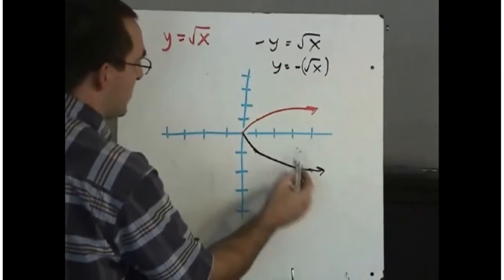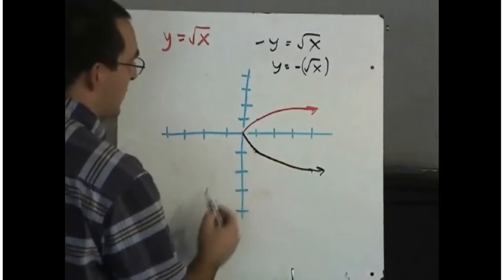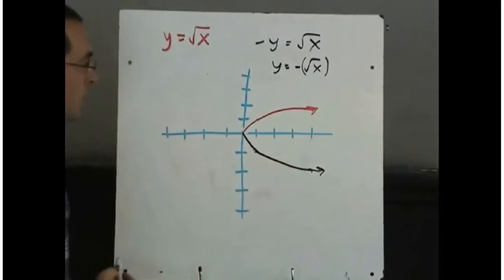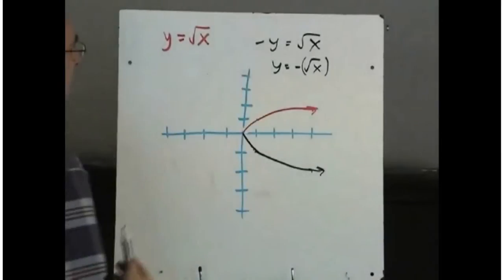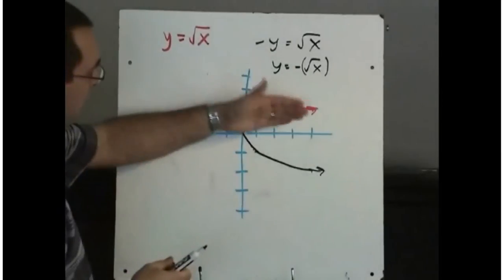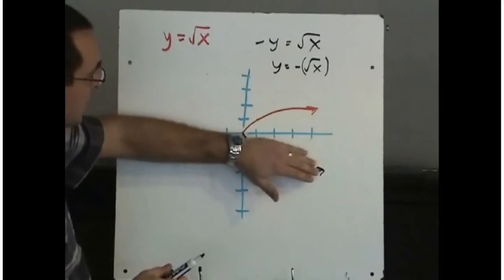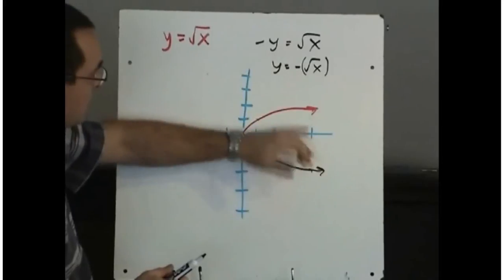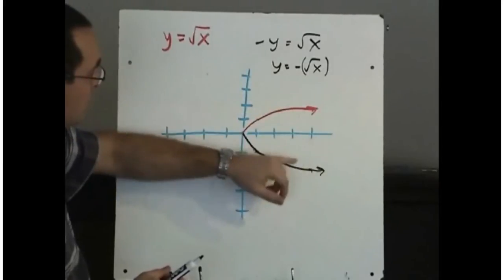So a positive 2 becomes a negative 2. Positive 1 becomes a negative 1. And obviously 0 remains the same. So when we replace y with minus y, we get the graph reflected about the x axis. When you reflect about the x axis, all of your y values have changed sign.